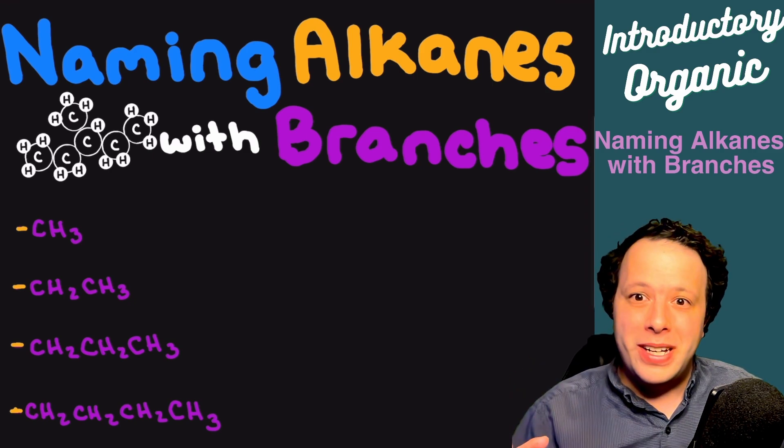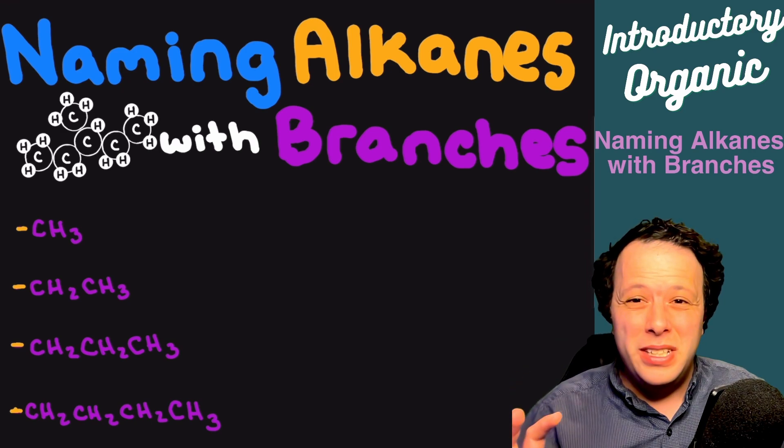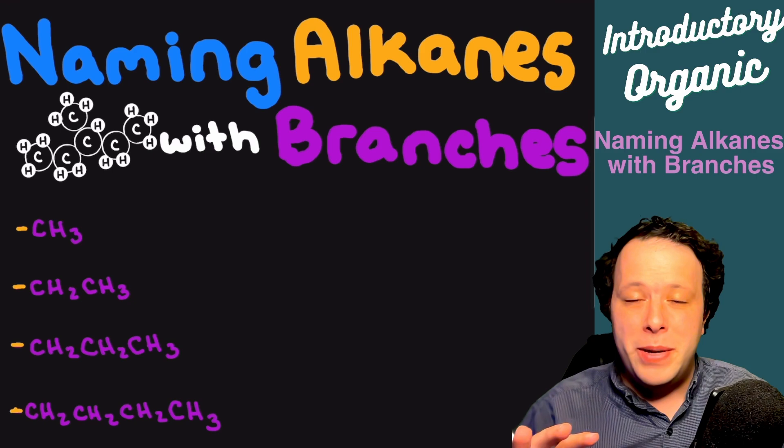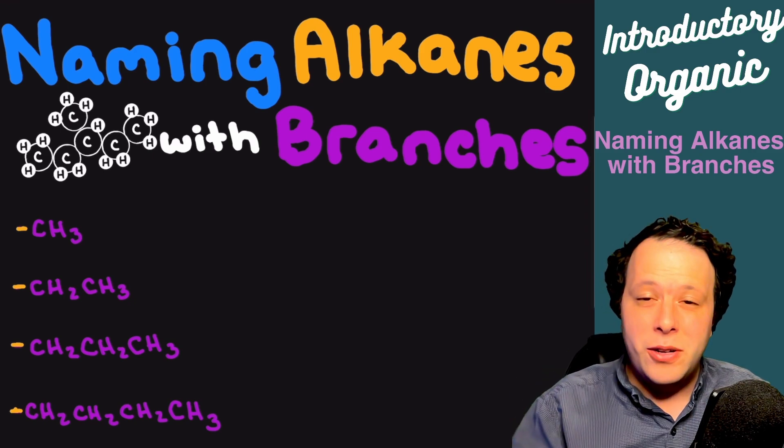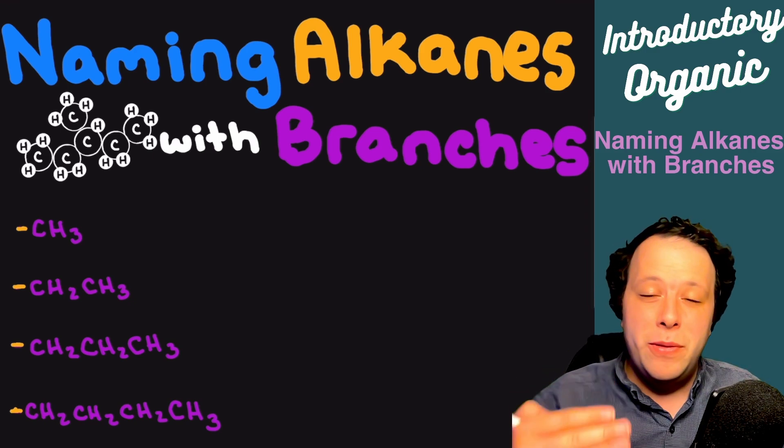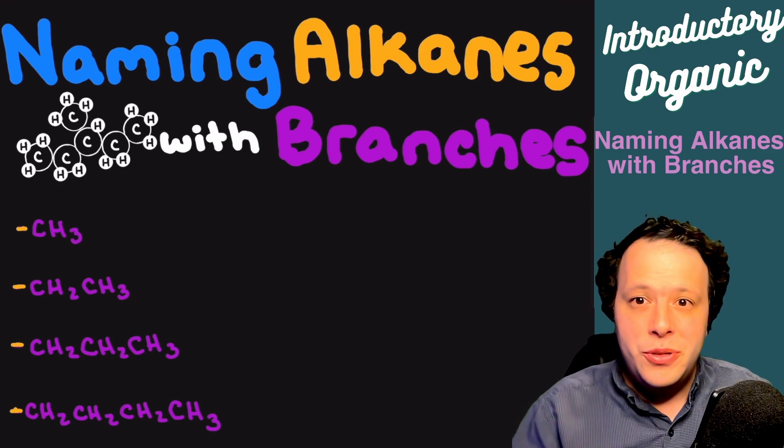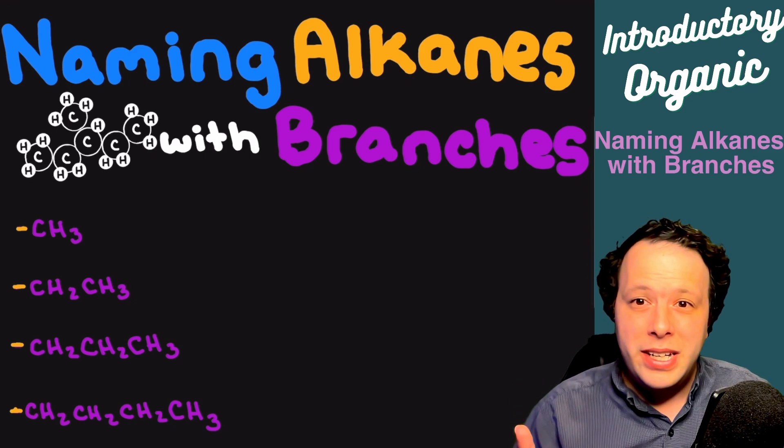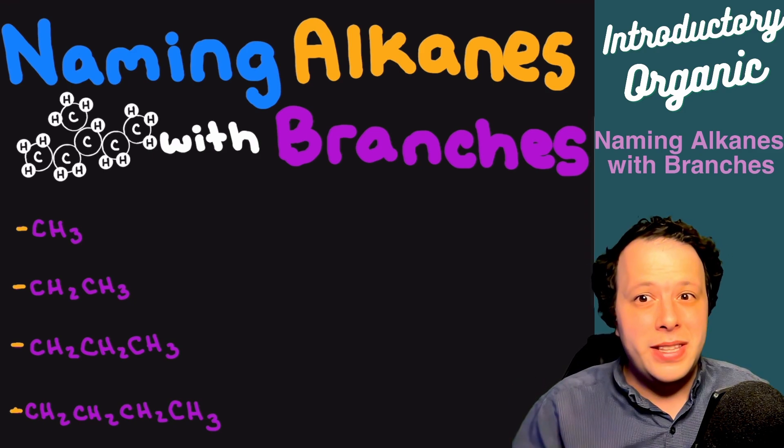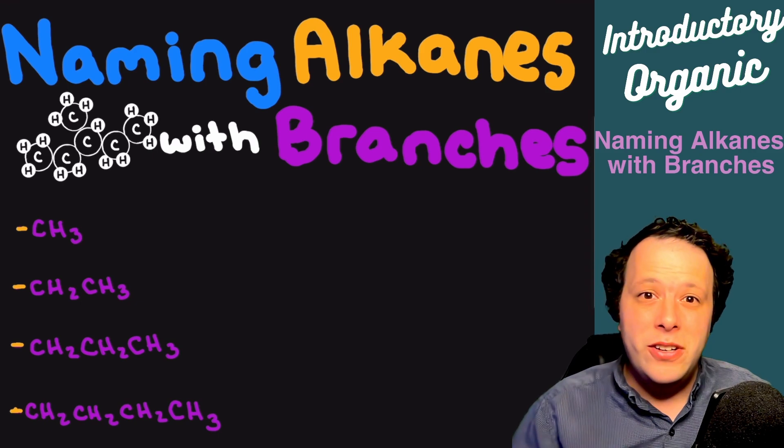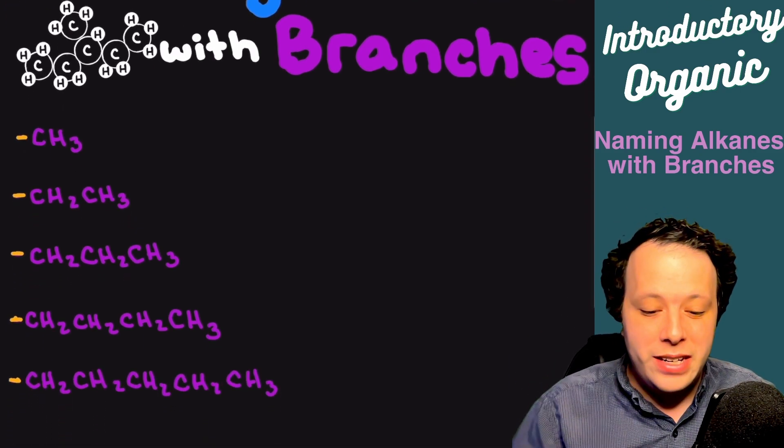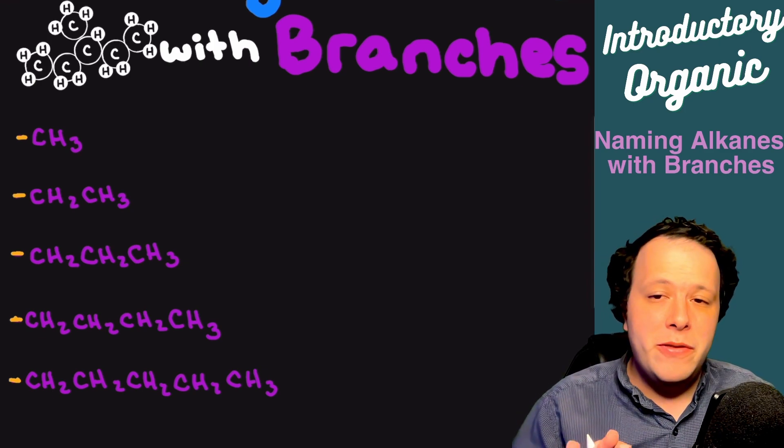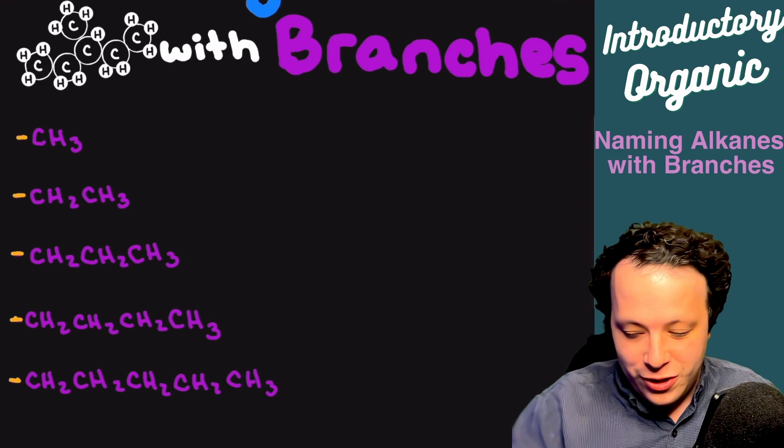This is part of my introductory organic chemistry series. So let's really go into how we can start naming these. Prior we've learned how to name alkanes and that there is a very systematic way to doing these. Now branches, which are commonly known as substituents, are parts that are breaking off the main chain and can be a little bit tricky when it comes to naming them.